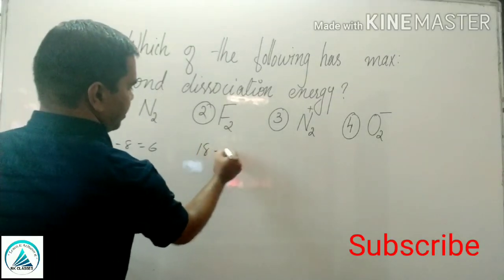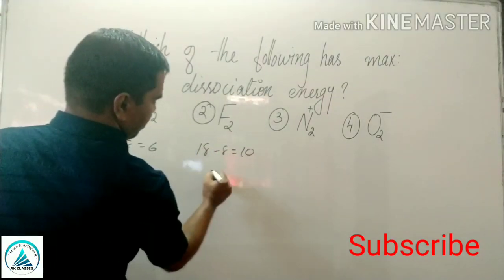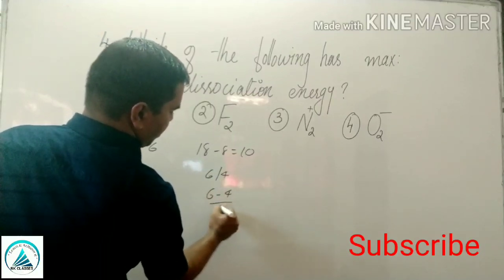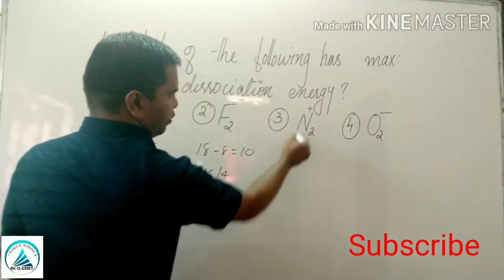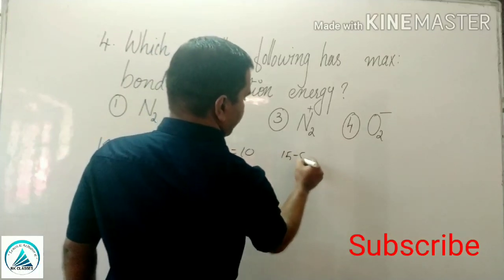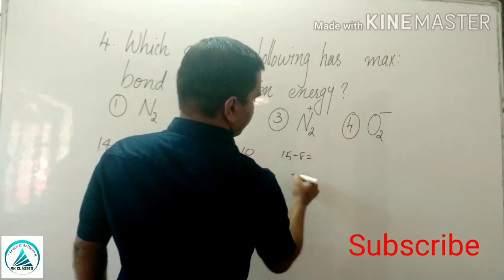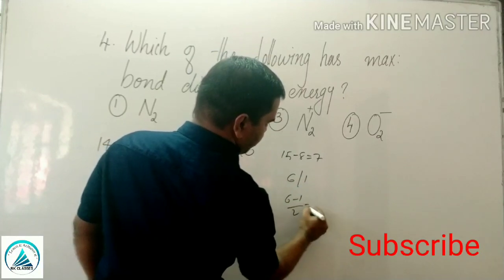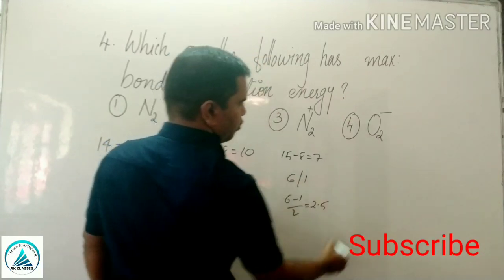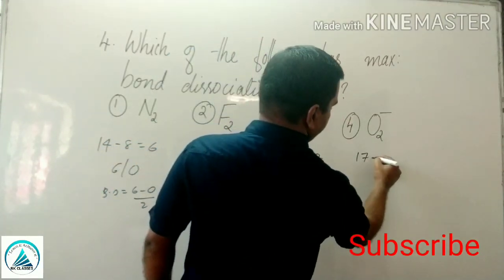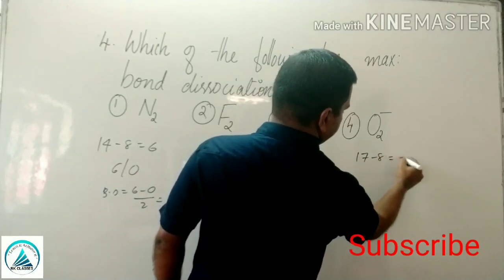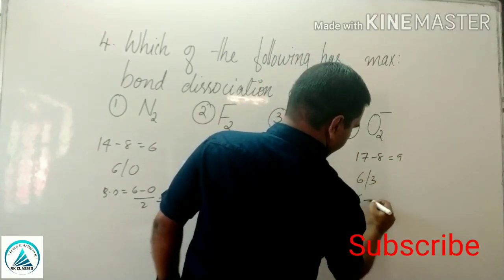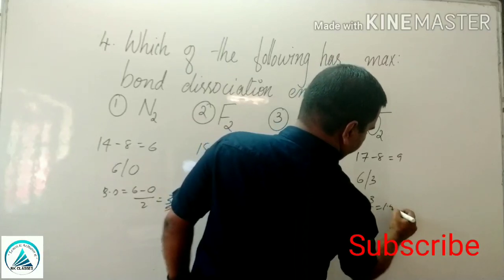F2: 18 electrons. 18 minus 8 = 10. Bond order = (6 minus 4) divided by 2 = 1. N2 plus: 15 electrons. 15 minus 8 = 7. Bond order = (6 minus 1) divided by 2 = 2.5. O2 minus: 17 electrons. 17 minus 8 = 9. Bond order = (6 minus 3) divided by 2 = 1.5.